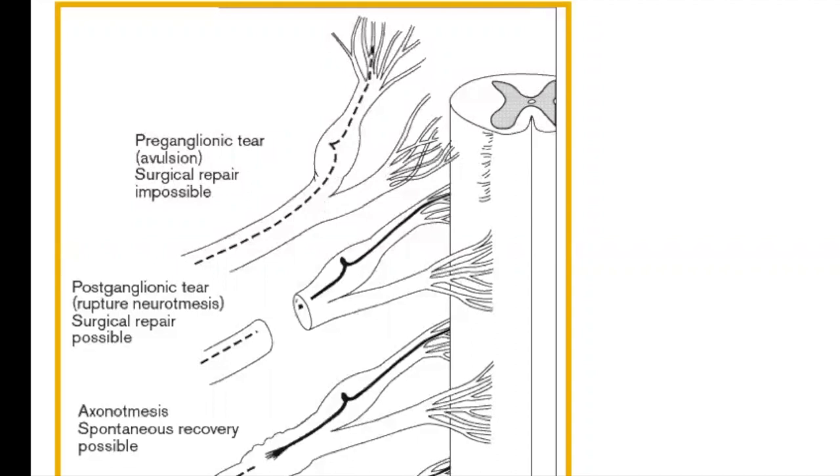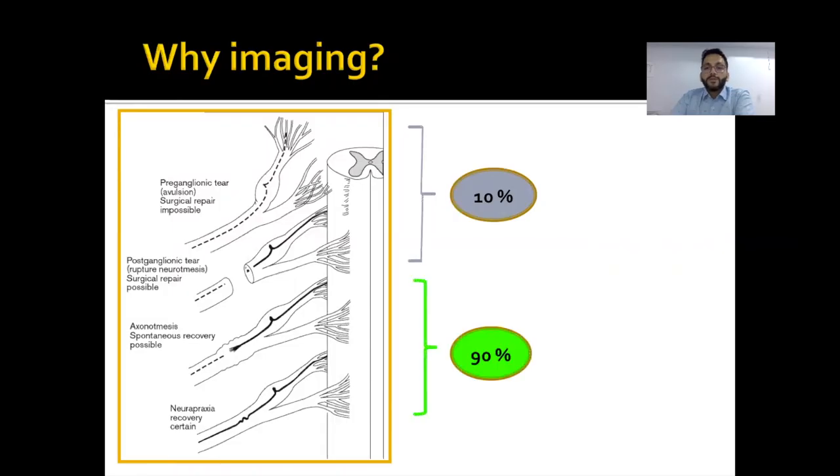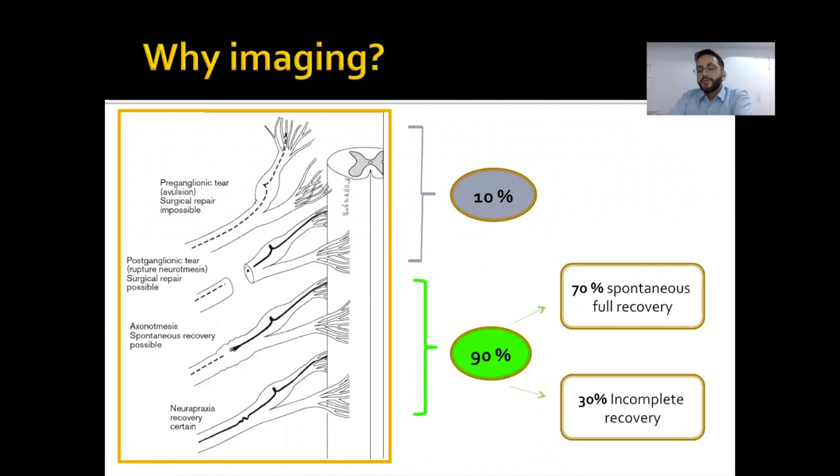So when we do imaging of these patients with brachial plexus injury, almost 10% of patients will have got severe injury in the form of nerve avulsion or nerve transection and 90% of patients will have got less severe or minor injury in the form of neuropraxia or axonotmesis. So these 90% of patients generally don't need surgery. 70% of them will have complete recovery and around 30% will have some neuro deficit. But the whole idea of imaging patients with brachial plexus injury is to identify this 10% of patients who will need surgery and who can be accorded with prognosis after surgery.